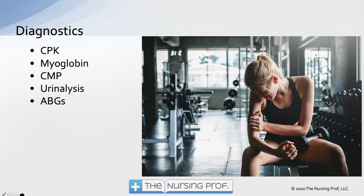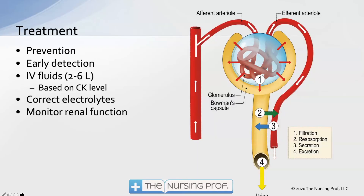Our treatment obviously starts with prevention. If we can prevent it by avoiding those medications, or by identifying early that we have an elevation in CPK and eliminating the medications, that's ideal. However, many of these situations result from trauma or excessive exercise where the person may not know ahead of time. The person who decides one day to go out and run a marathon without training is not making a wise decision. We can prevent that through education — training ahead of time is important.